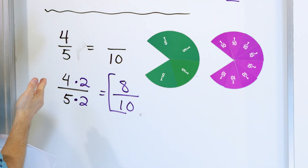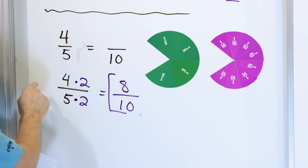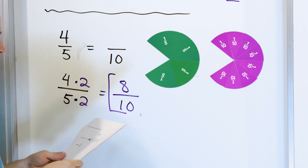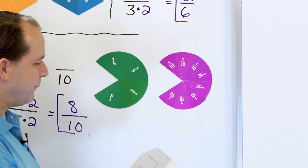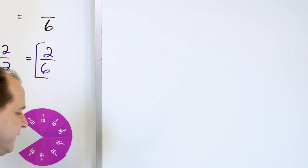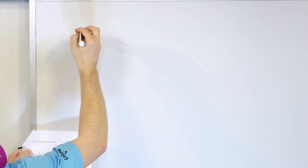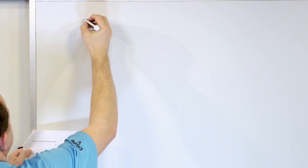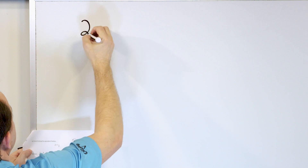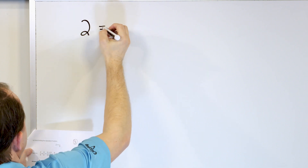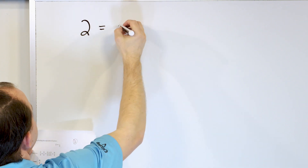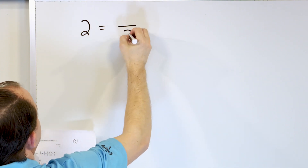On a test you're not going to have magnets to do this, so we have to know how to do it with math — multiply the top and bottom by 2 in this example to get the final answer. Alright, let's take a look at the next problem. Let's mix it up a little bit — let's say we have the number 2 equals something over 3.